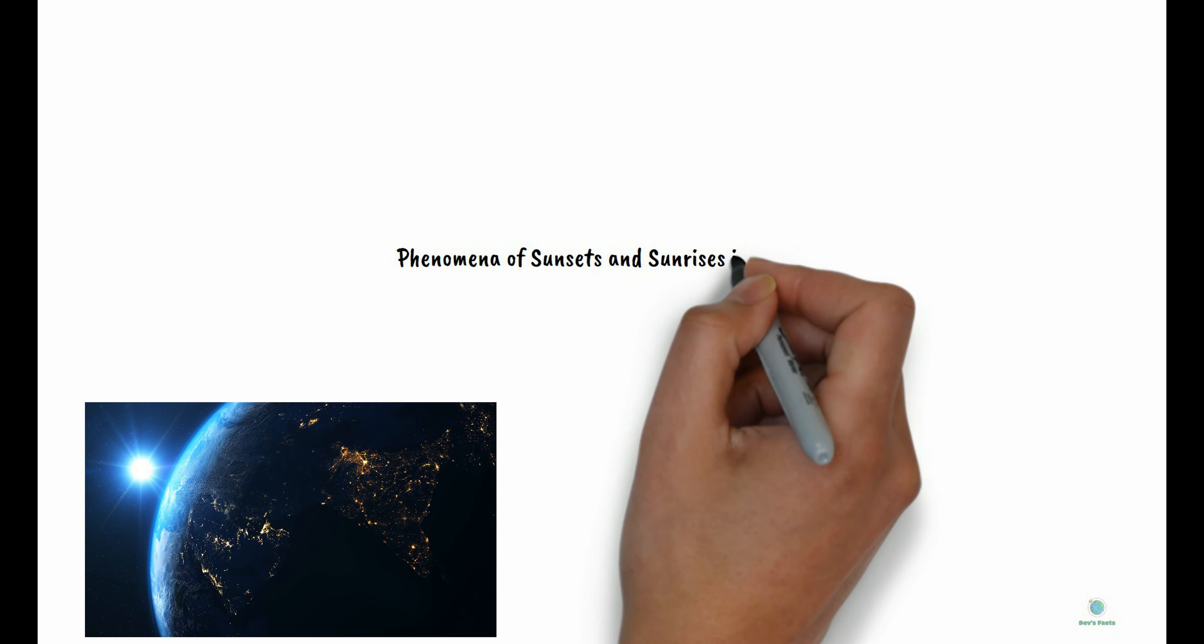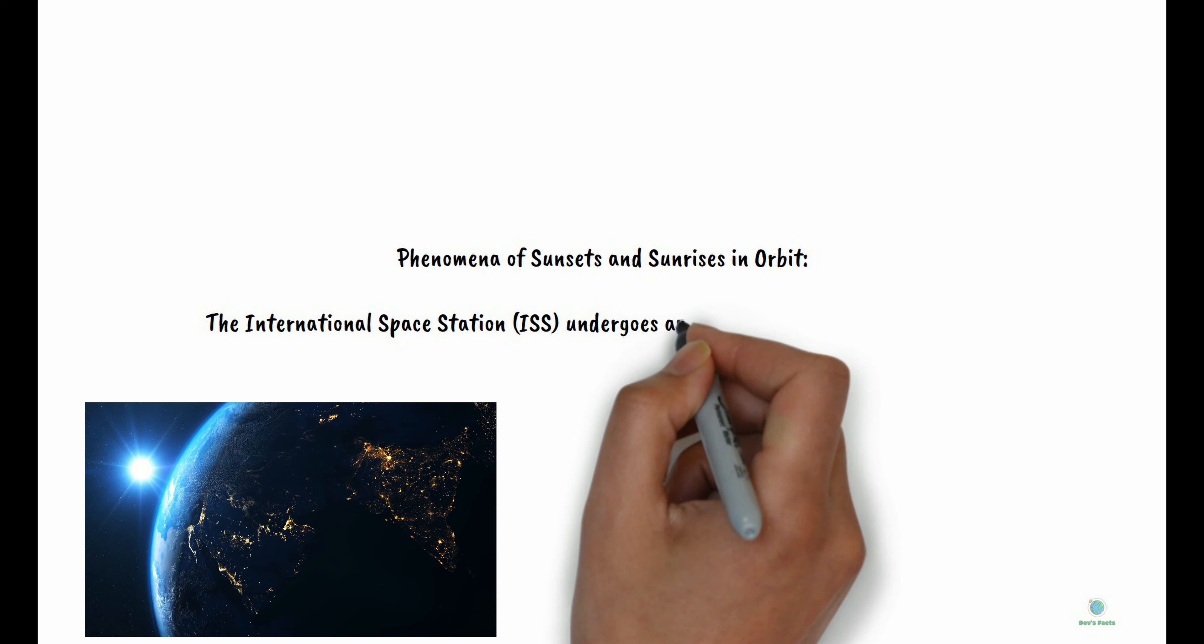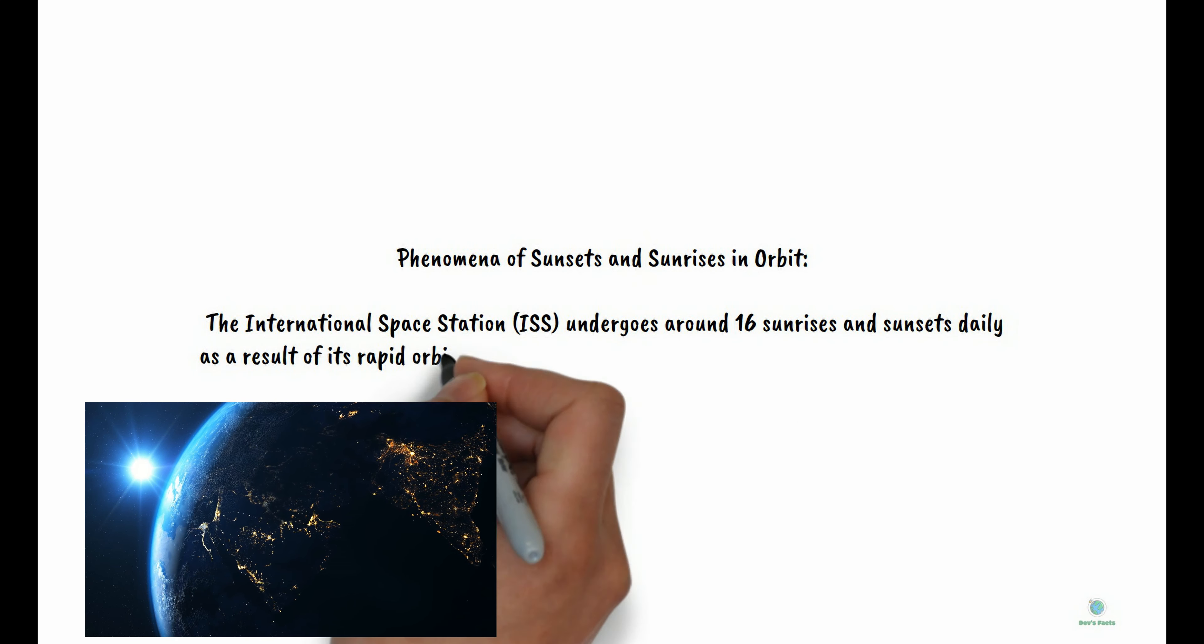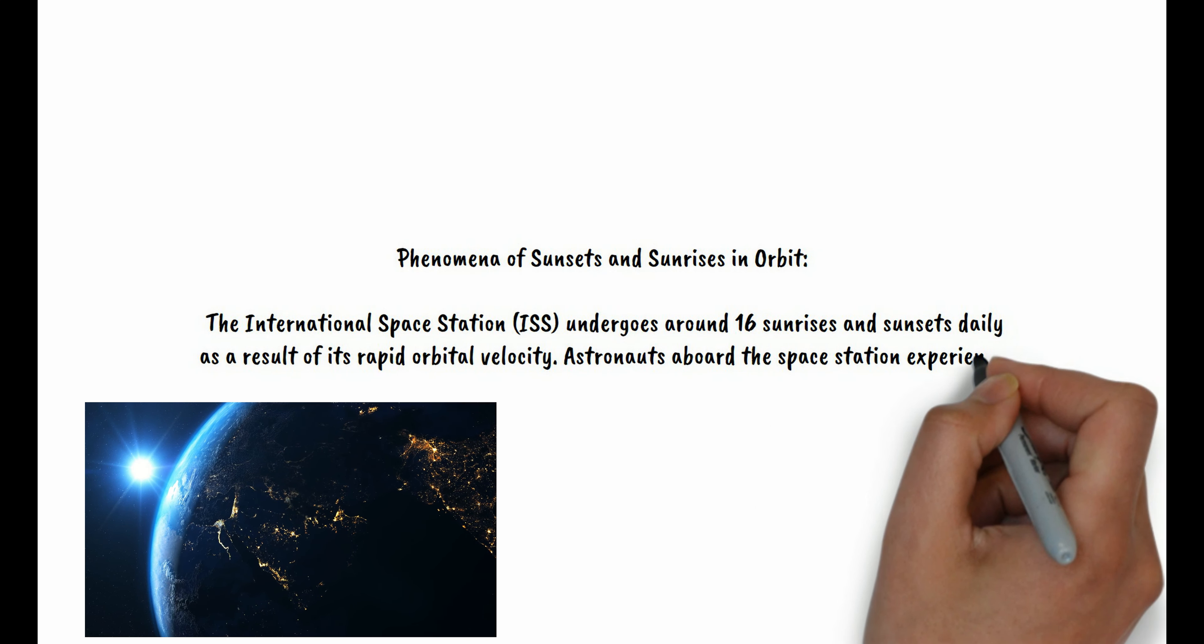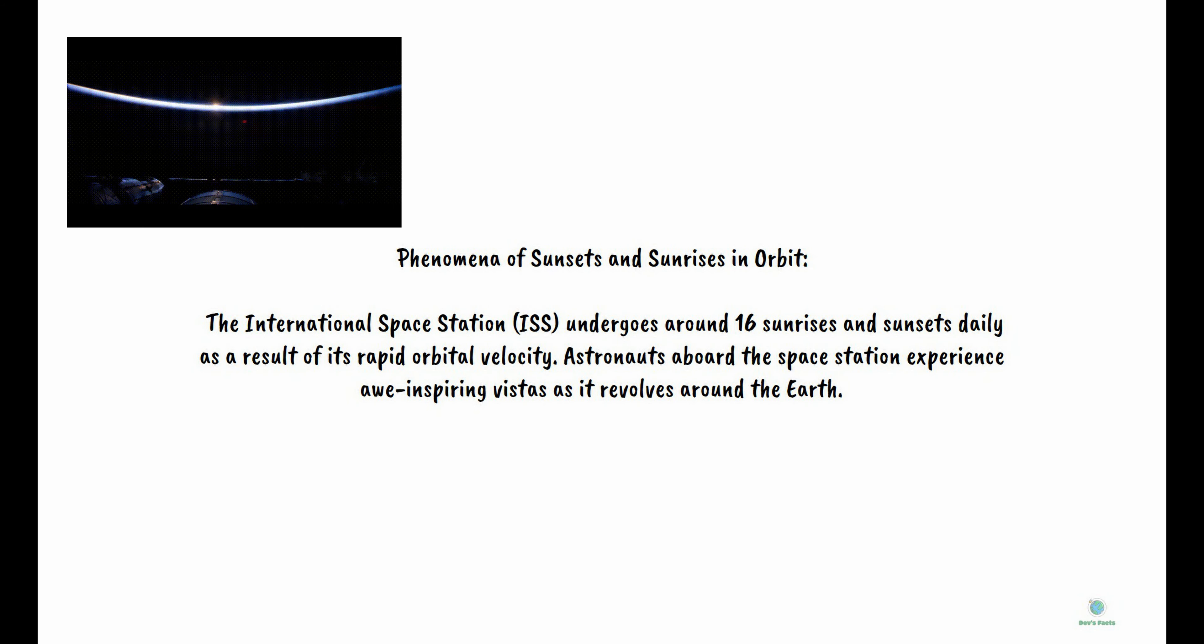Orbital Sunsets and Sunrises: The International Space Station undergoes around 16 sunrises and sunsets daily as a result of its rapid orbital velocity. Astronauts aboard the station experience awe-inspiring vistas as it revolves around Earth.